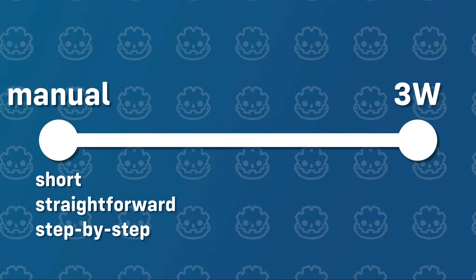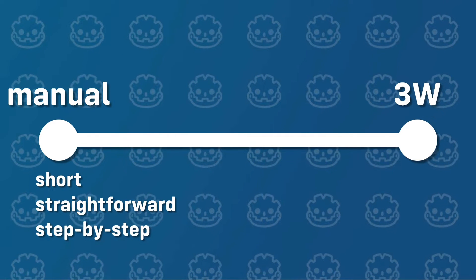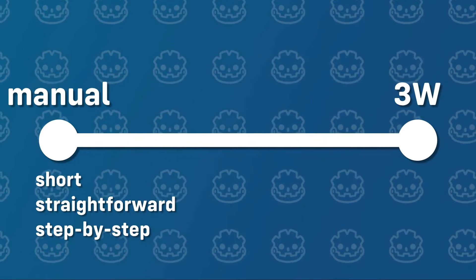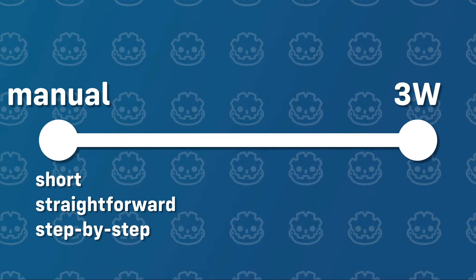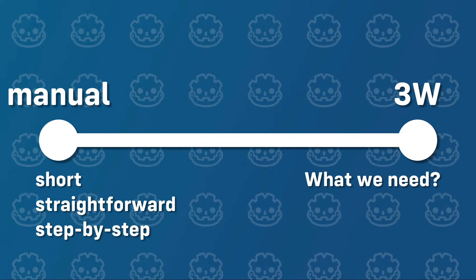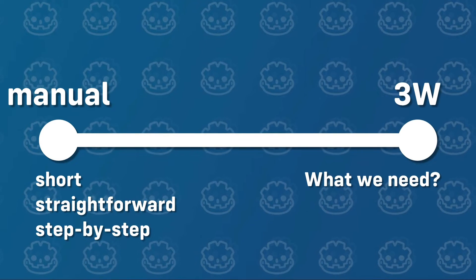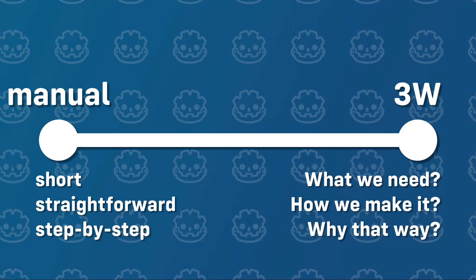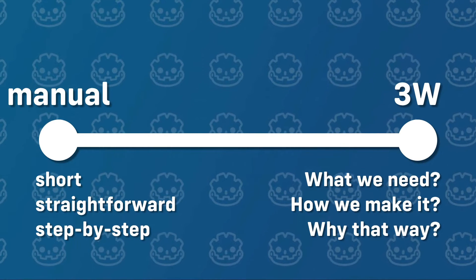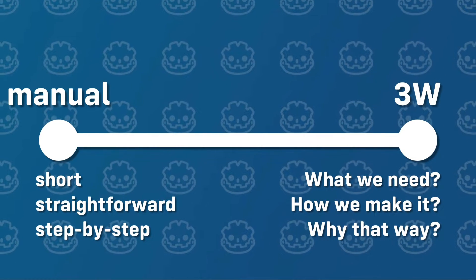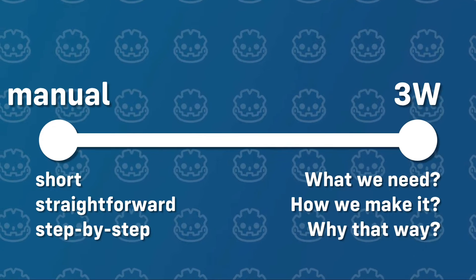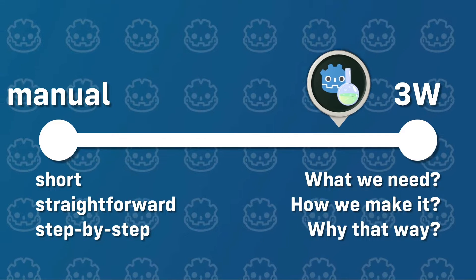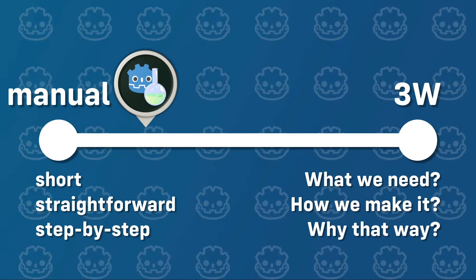On the other end of the spectrum, we have the over-explainer or the 3W tutorials. These are not just step-by-step guides — they also answer 3 different W questions: what do we need in order to make a feature or a game, how can we make it, and why do we make it that way? You also get a behind-the-scenes look at the design decisions and the thought process behind coding a feature in a certain way. Again, this is a spectrum, not a binary distinction between the two kinds of tutorials.